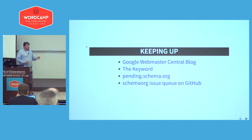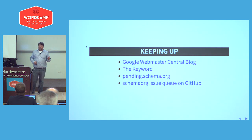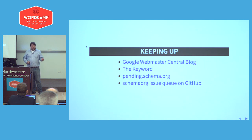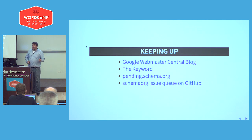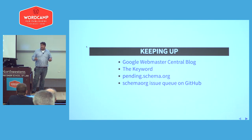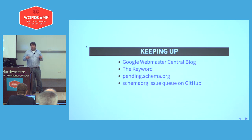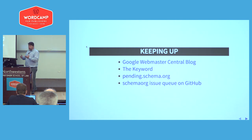A few places to monitor and keep up with changes: the Google Webmaster Central blog is infrequent, but when they write about something the internet changes — that's where they announced every site should be HTTPS and that schema.org and web performance matter. The Google keyword blog posts search-specific things too. Pending.schema.org and the schema.org issue queue on GitHub is where new schema ideas are presented — once published there, they appear on pending.schema.org for community feedback and review. That's where to track what's coming next.